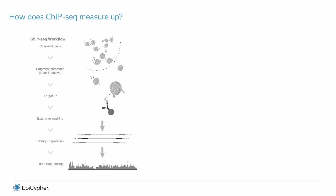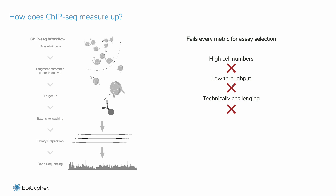So how does ChIP-seq measure up? Despite its widespread use, it fails every single one of these metrics. It requires millions of cells and is not ideal for rare or precious cell types. It takes approximately a week to perform an experiment and has been hard to adapt for high throughput. Many steps require cell or tissue-specific optimization, and the harsh wash steps during IP can also reduce target yields. ChIP-seq requires many reads per reaction, making sequencing the main cost of the assay. And even with these investments, the resulting data are often poor quality and unreliable. ChIP has had a dominant hold on the field for decades, not because it is an ideal technique, but because nothing else was readily available.